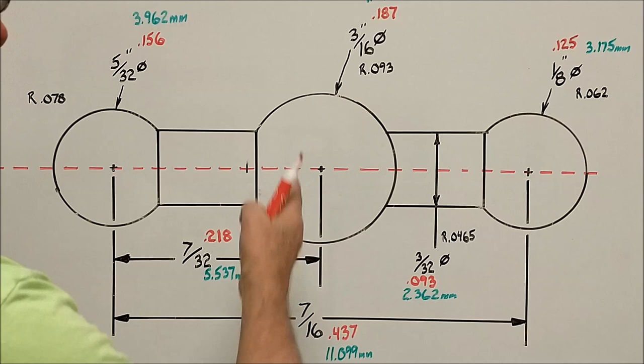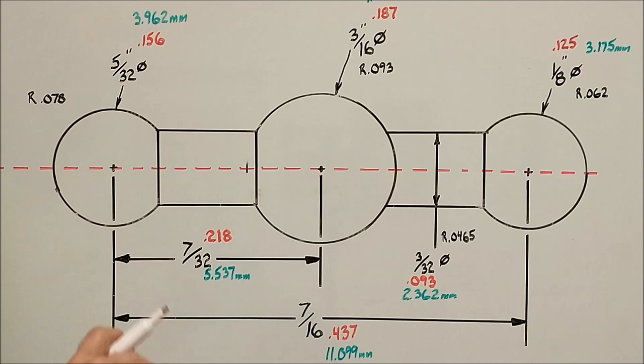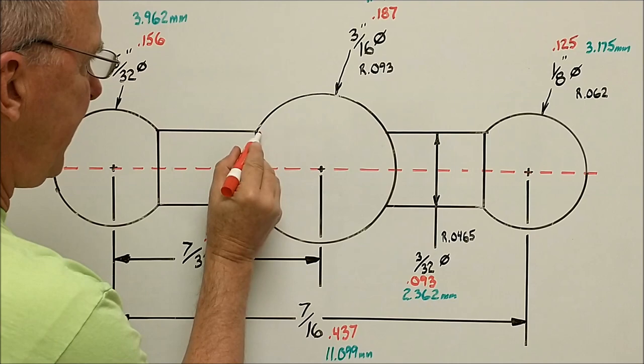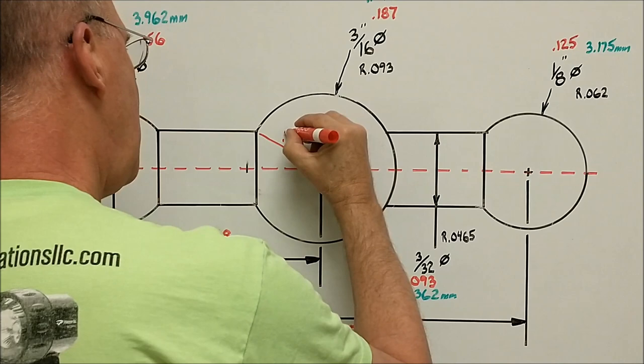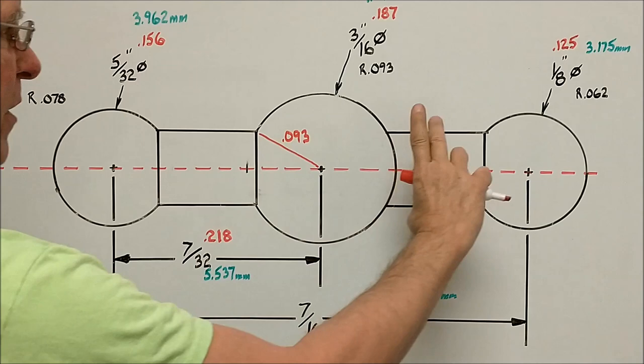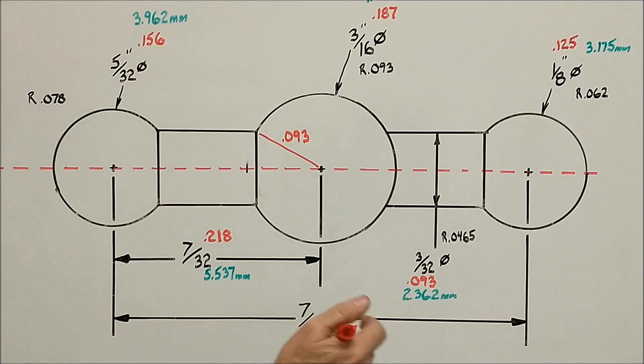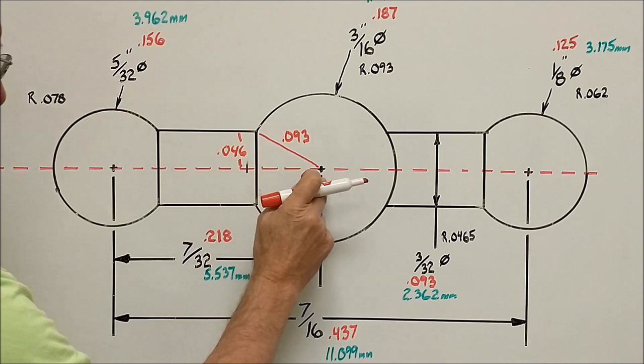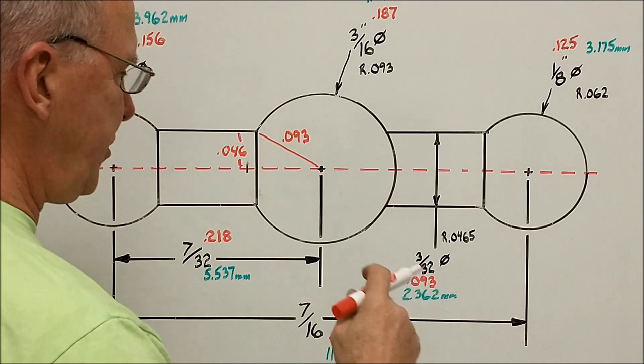Let's start with the center 3/16th diameter, that's a 0.093 radius. Knowing that, we know there's a triangle right here. One leg of the triangle is the radius - 0.093. We know this is also 0.093 across, so the radius of 0.0465 is right here. Once you have hypotenuse and one leg, a squared plus b squared equals c squared kicks in and you can calculate this leg.